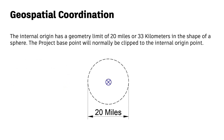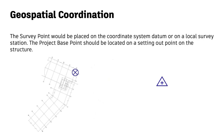The project base point, by default, is positioned on top of the internal point and should remain clipped. There is a geometry limit of 20 miles around the project base point. The survey point should be placed at the origin of the coordinate system and remain at 0,0,0, or placed at a local survey station with the associated coordinates. The project base point should be located on a setting out point that can be clearly established on site — for example, the intersection of two grids.